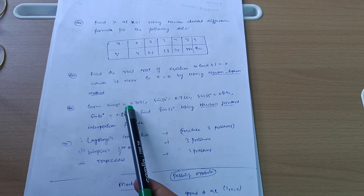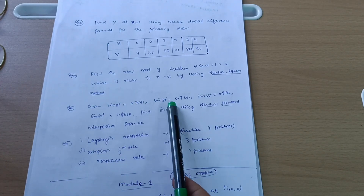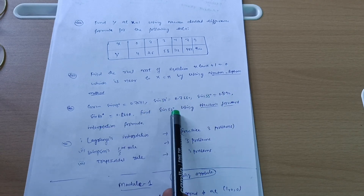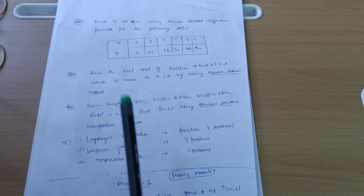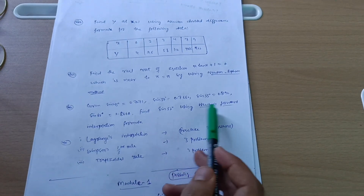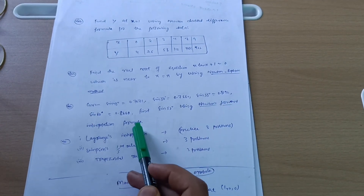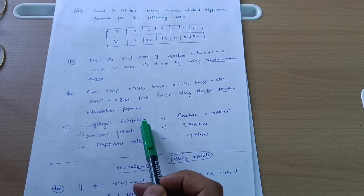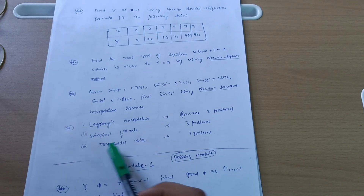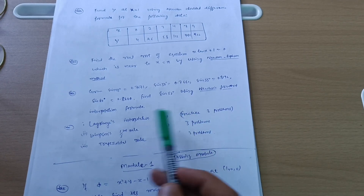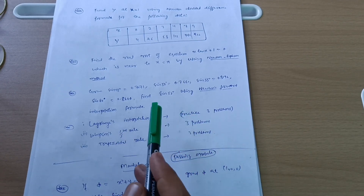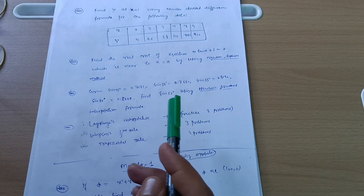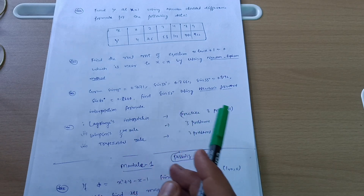There is sometimes intermixing of questions in Module 4, so go through Newton-Raphson as well. Next, given sin(50°), sin(55°) values, find sin(52°) using Newton's forward interpolation formula — practice three to four problems. Also practice Lagrange's interpolation formula, Simpson's one-third rule, and the trapezoidal rule — three problems from each concept. This way you can get at least 15 to 20 marks from Module 4. These are all numerical methods, so it is better to grab marks from these modules.